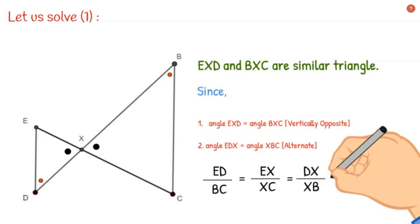So ED is half of AB, which gives us ED is half of BC as well. So ratios of all the sides, all the respective sides, is equal to half.